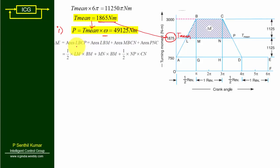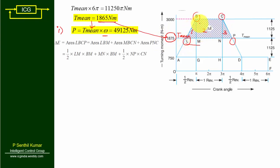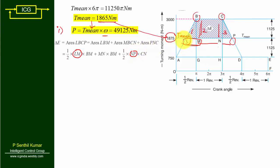For subdivision two, we need ΔE, which is the area of region LBCP. This consists of a triangle (area = ½ × LM × BM), plus a rectangle (area = MN × BM), plus another triangle (area = ½ × NP × CN). The problem is we don't yet know the values of LM and NP.